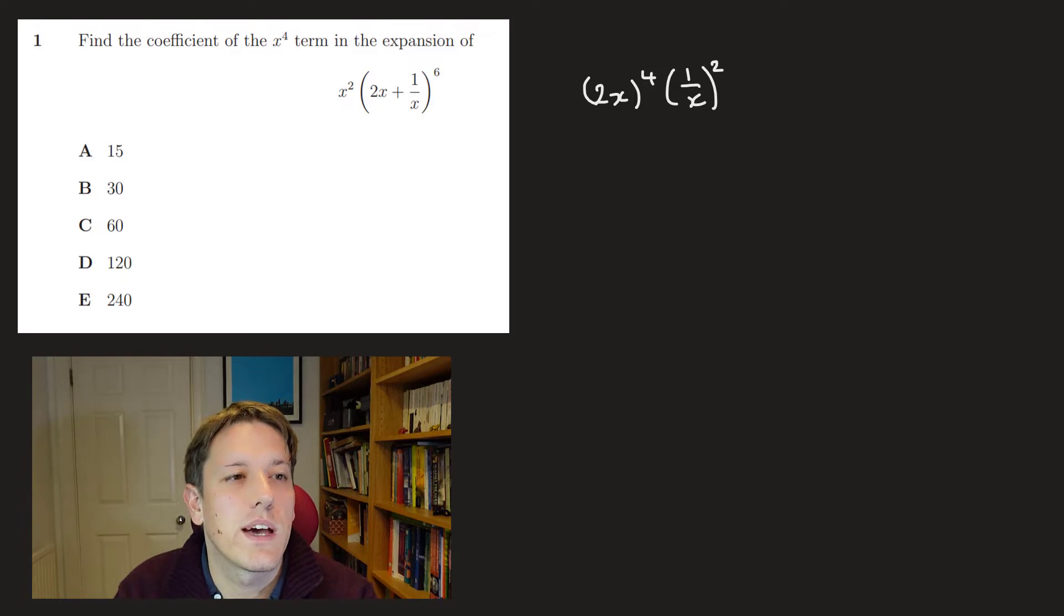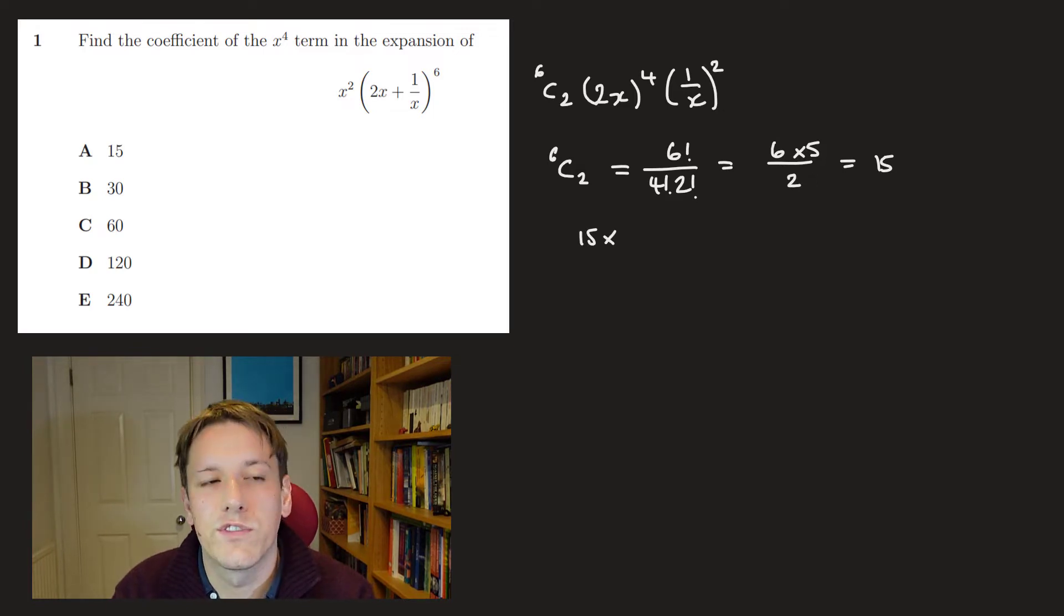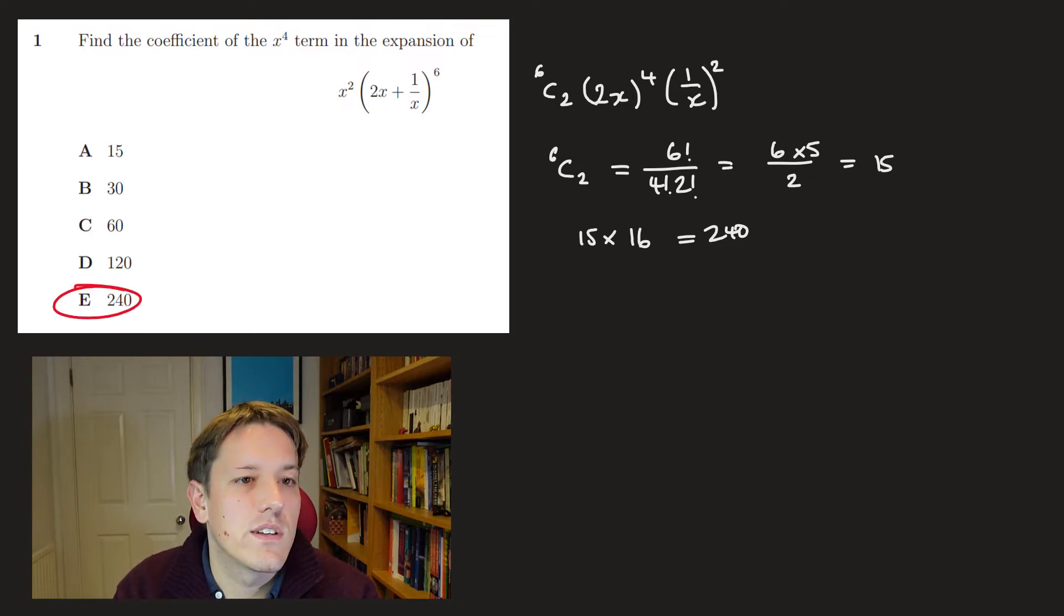Just remembering these do have to add up to 6. And then the coefficient that will go with that would be 6 choose 2 or 6 choose 4. So we've just got to work that out. So 6 choose 2, you can do it in a number of ways. You can write out Pascal's triangle if you want. I'll just use the formula: 6 factorial over 4 factorial 2 factorial. Now 6 factorial over 4 factorial is just 6 times 5. So this is 6 times 5 over 2, which is 15. So I want to have 15, and then I'm going to get also a 2 to the power of 4 from the 2x to the power of 4. So it's 15 times 16, which is 240. And so the answer is E.